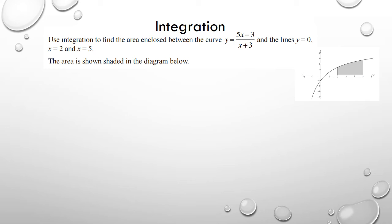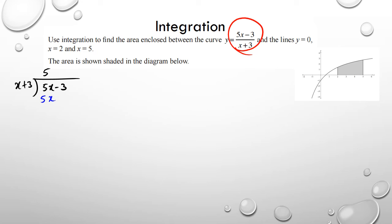For this question you've got to integrate the function, but to do that we need to use long division first. There are other ways but I prefer long division. So I have x plus 3 dividing into 5x minus 3. To eliminate the x term I use 5, and 5 times (x plus 3) gives 5x plus 15. Subtracting: 5x minus 5x cancels, and negative 3 minus 15 is negative 18.